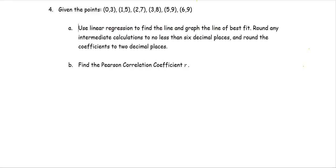In this example, given the points (0,3), (1,5), (2,7), (3,8), (5,9), and (6,9), in Part A we are going to use linear regression to find the line and graph the line of best fit. We will round any intermediate calculations to no less than 6 decimal places and round the coefficients to 2 decimal places. In Part B, we are going to find the Pearson correlation coefficient R.